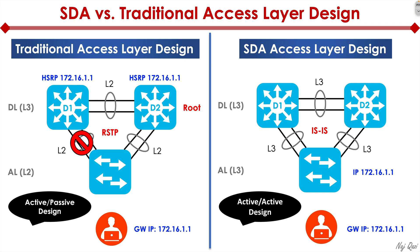This is what we call an active-active design, because we're doing load balancing using a hashing algorithm — either flow-based or per-packet load balancing, though typically it's flow-based. The idea is that we're distributing the load of the traffic and fully taking advantage of our investment using active-active design.